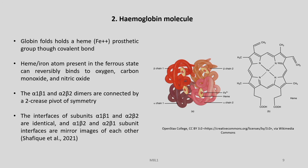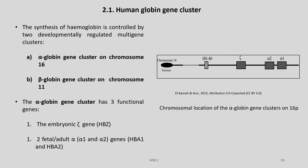The interfaces of subunits alpha-1 beta-1 and alpha-2 beta-2 are identical, and alpha-1 beta-2 and alpha-2 beta-1 subunit interfaces are mirror images of each other. The iron acts as a prosthetic group. The synthesis of hemoglobin is controlled by two developmentally regulated multigene clusters: the alpha-globin gene cluster on chromosome 16, and the beta-globin gene cluster on chromosome 11.